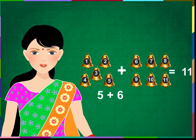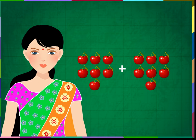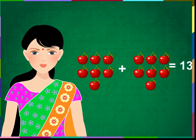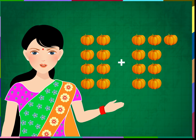5 plus 6 is equal to 11. Count the cherries and write the sum. 7 cherries and 6 cherries make 13 cherries. 7 plus 6 is equal to 13.